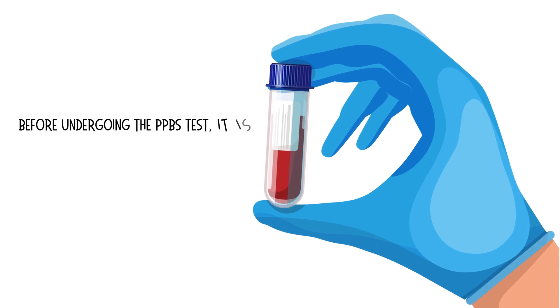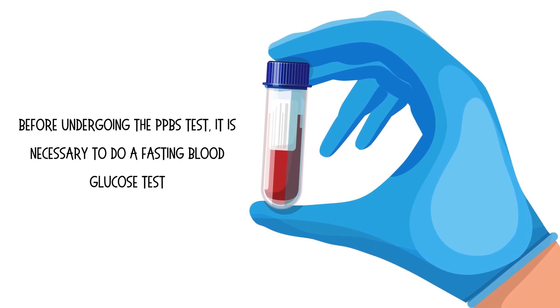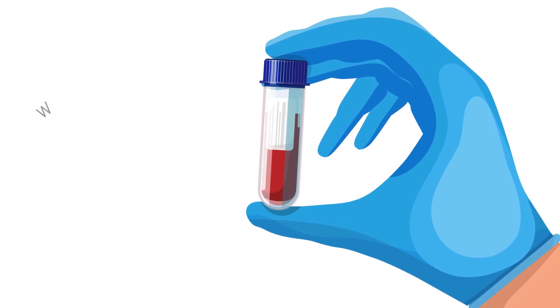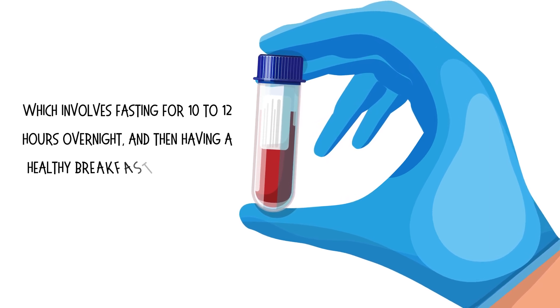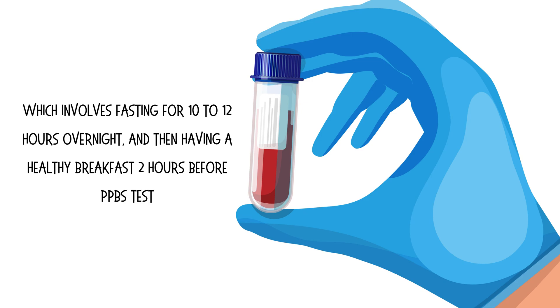Before undergoing the PPBS test, it is necessary to do a fasting blood glucose test, which involves fasting for 10 to 12 hours overnight, and then having a healthy breakfast two hours before the PPBS test.